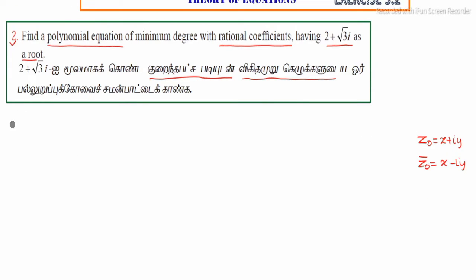Now we'll use this to solve the problem. Solution: First, given 2 plus root 3i is a root of the polynomial equation, and this is Z₀.